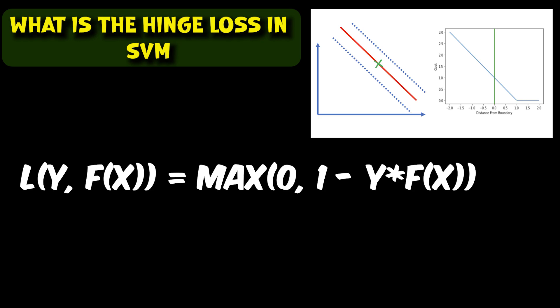The hinge loss penalizes predictions that are on the wrong side of the margin, that is the distance between the hyperplane and the closest point from either class. It encourages the SVM algorithm to find a hyperplane that maximizes the margin and correctly classifies as many training examples as possible.